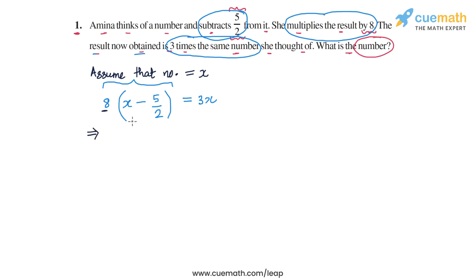So first, let's multiply 8 with the terms inside the bracket. We have 8 times x, so that's 8x. And we have 8 times minus 5 by 2, and that will be minus 20. So we will get 8x minus 20 on the left hand side, and on the right hand side, we will have 3x.